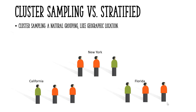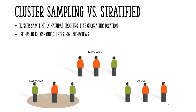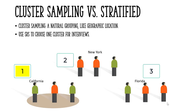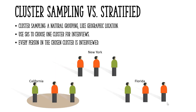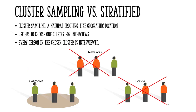For example, you might have clusters of people in California, New York, and Florida, and you'll use simple random sampling to choose one cluster for interviews. You assign a number to the groups and then choose one of those random numbers. Let's say simple random sampling picked California — you'd interview all three people in that California cluster and no one in the clusters that were not chosen.